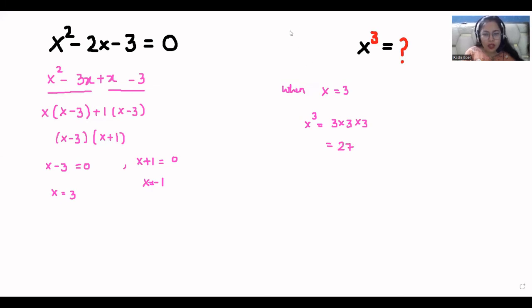Now when x equals minus 1, x cube equals minus 1 times minus 1 times minus 1, that is minus 1. So we have two values of x cube: 27 and minus 1.